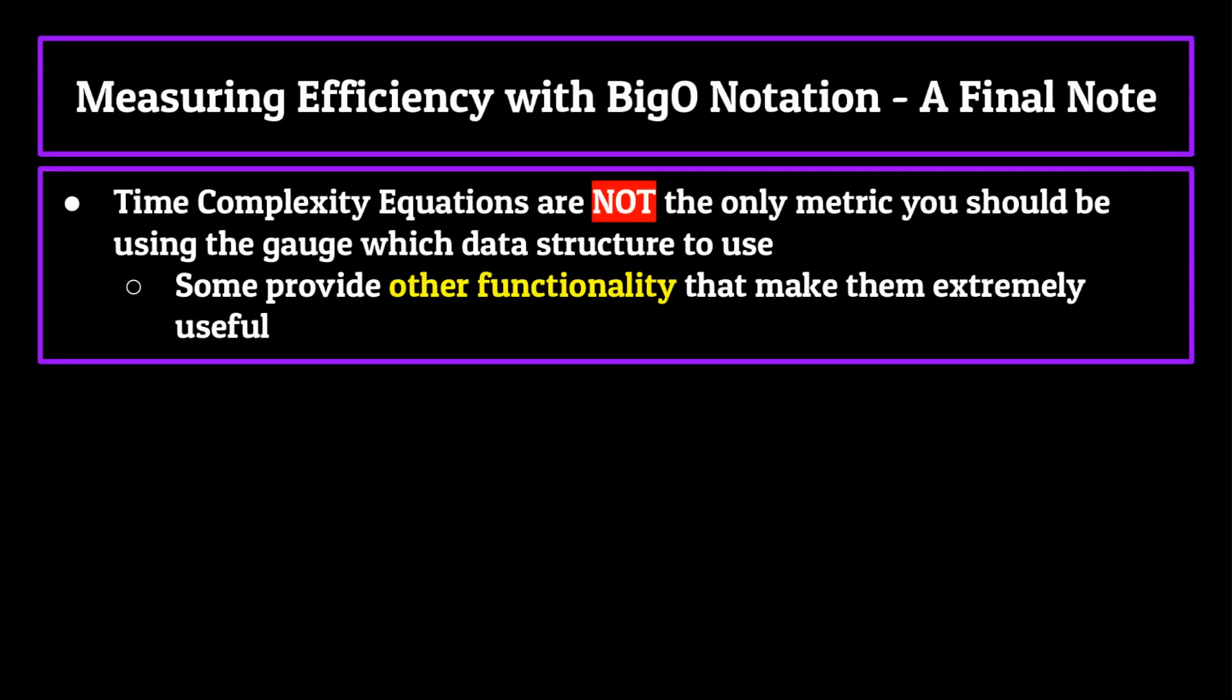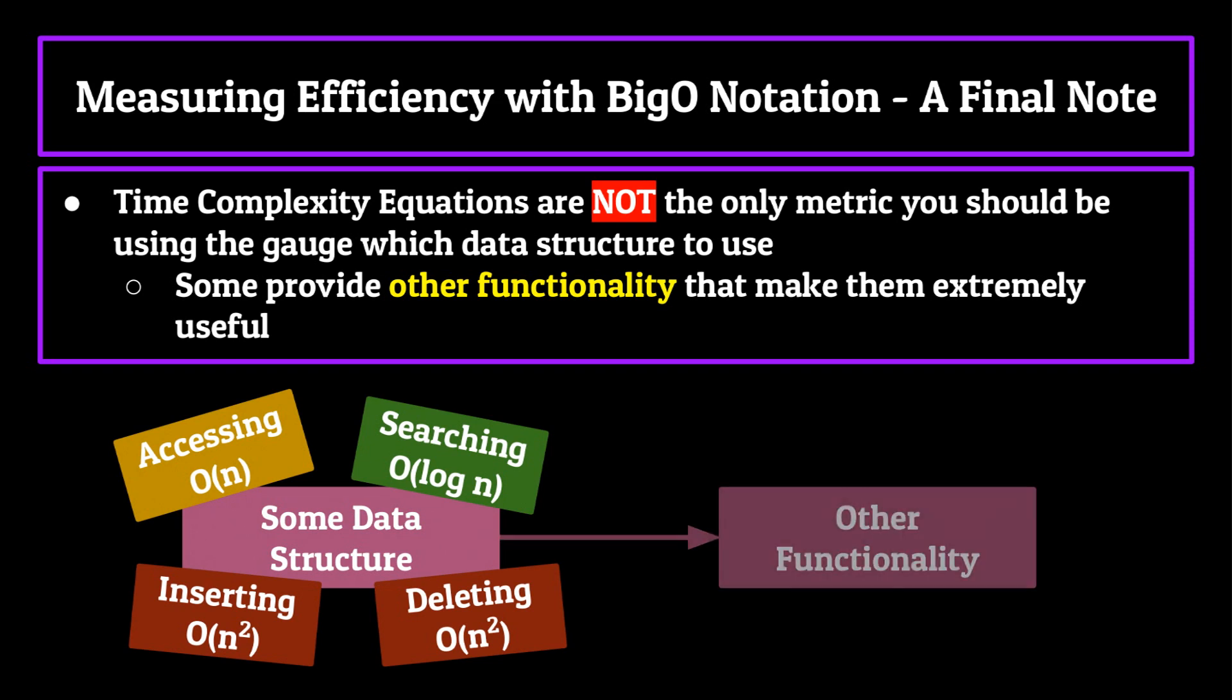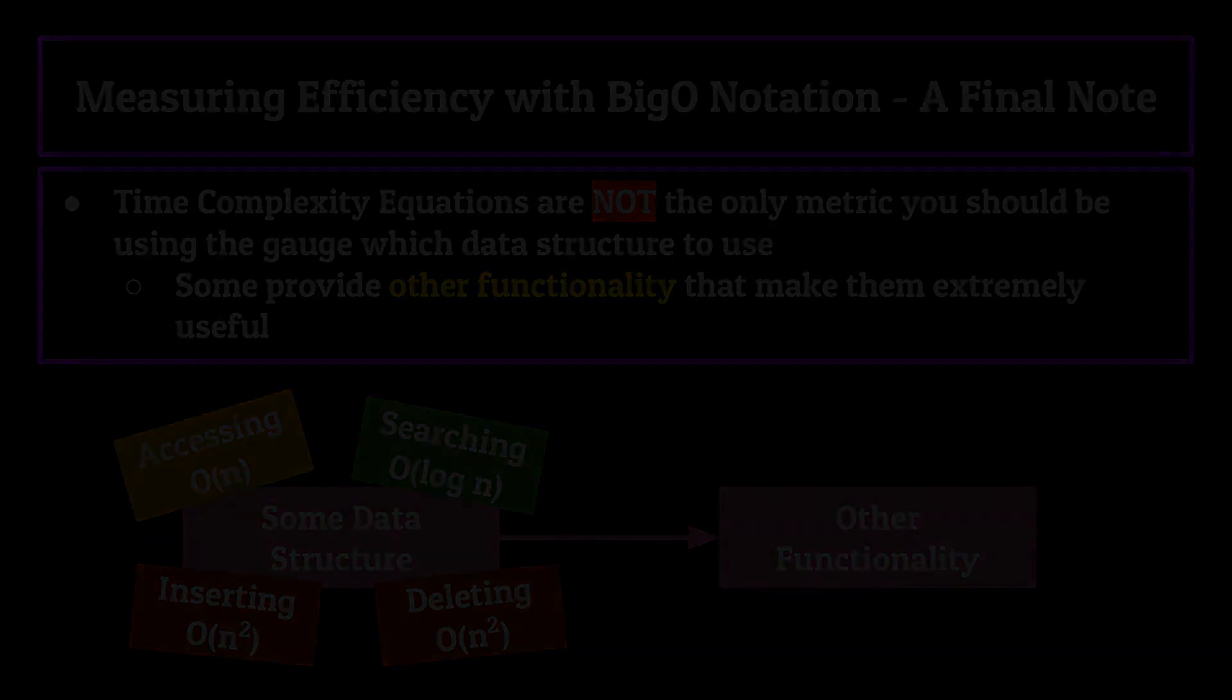Now the final thing I want to talk about is just a reiteration of something I said before. These time complexity equations are not the only metric you should be using to gauge which data structure to use. As we get deeper and deeper into this series, you'll see we talk about many data structures which don't seem that efficient based on their time complexity equations but provide some other functionality that make them extremely useful for programmers. Now that we have some basic knowledge on how we actually grade these data structures in terms of efficiency, let's hop into our first data structure, the array.